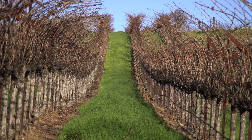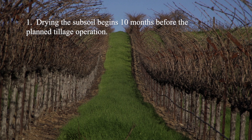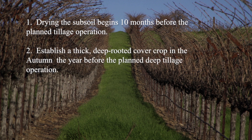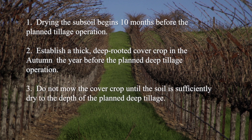In summary, several salient points: First, getting the subsoil sufficiently dry for tillage starts in the autumn before the tillage operation, ten months earlier. Establish a thick, deep-rooted cover crop in the autumn of the year before you expect to conduct deep tillage. Even if your soil is on flat ground and a winter cover crop is not required by local regulations, still put in a cover crop — you will need it to draw out water in the following summer. Do not mow the cover crop until the soil is sufficiently dry to the depth of the deep tillage, as even a dormant cover crop will still draw moisture from roots in the subsoil. Do not disc under the cover crop thinking it will help dry the soil — disking will only dry the top four inches and leave the rest wet with no roots to draw moisture out.